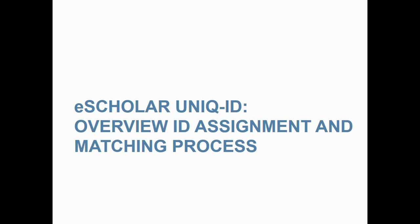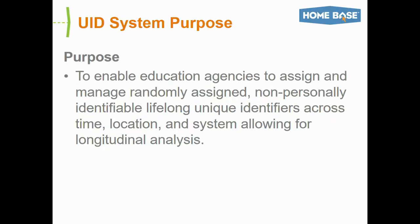Let's talk about the ID assignment process and matching process inside of UID. The student UID system's overall purpose is to allow us the ability to randomly generate unique identification numbers for students. We want those numbers to follow students across time and location such that they have the same UID for every year they're enrolled in a school in North Carolina, no matter what school they transfer in and out of inside the state.